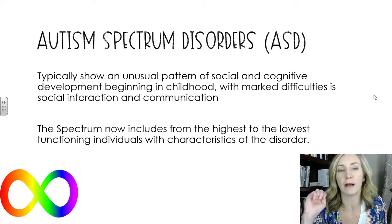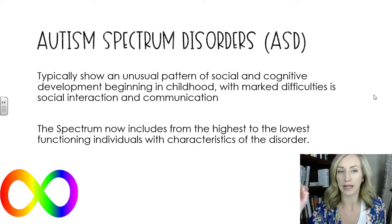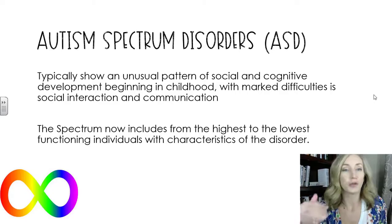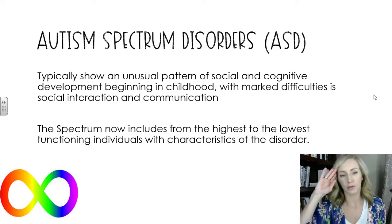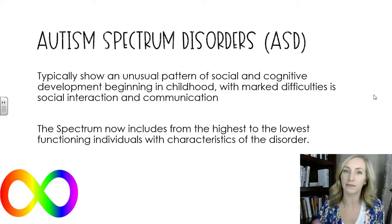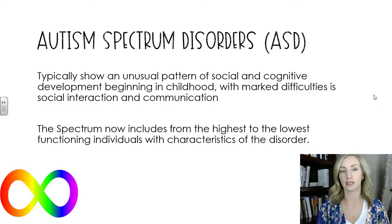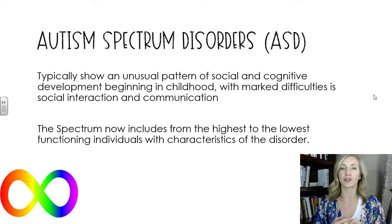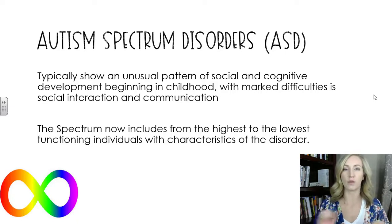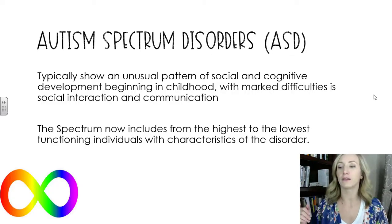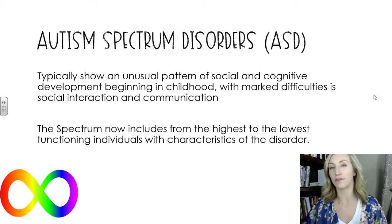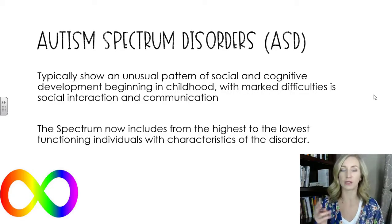The first big one we should talk about is autism spectrum disorder, or ASD. It typically shows an unusual pattern of social and cognitive development beginning in childhood, with marked difficulties in social interaction and communication. That is the real big indicator — things like a lack of making eye contact, not really seeking out or even liking affection, even with mom. So that social interaction is huge.